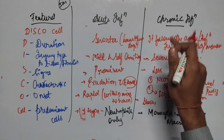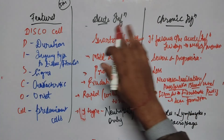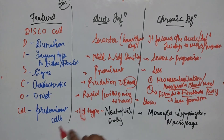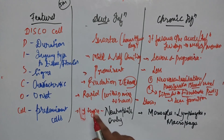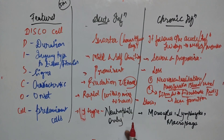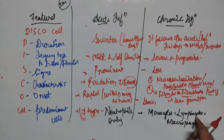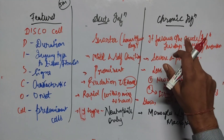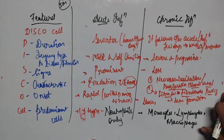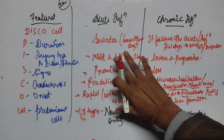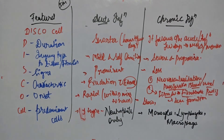The predominant cell in acute inflammation is the neutrophil only, which is later replaced by monocytes, lymphocytes, or macrophages in chronic inflammation. This concludes the discussion on the differences between acute and chronic inflammation.